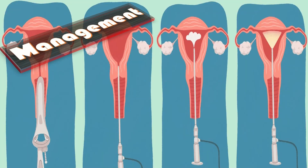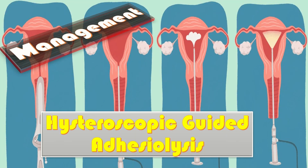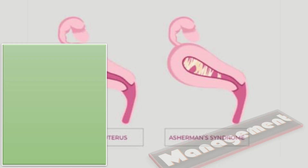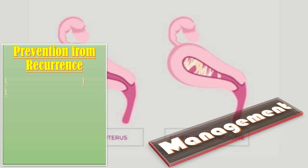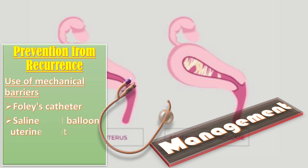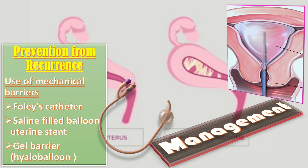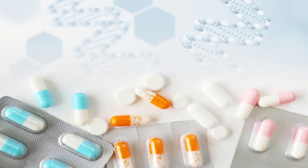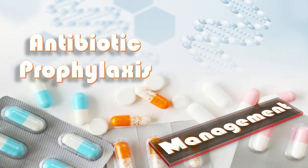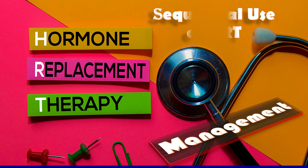Hysteroscopic guided adhesiolysis is the treatment of choice, and it is done in conjunction with laparoscopy as a protective measure against uterine perforation. For the prevention of recurrence, we use mechanical barriers like Foley's catheter, saline-filled balloon uterine stent, and gel barriers like hyaluronic acid balloon. Antibiotic prophylaxis is given after this procedure, and sequential use of HRT stimulates endometrial growth and prevents the opposing walls from fusing together.